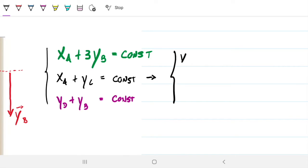So if I derive this, I'm going to get velocity of A plus 3 times the velocity of B has to be 0. Because the derivative of a constant is 0, likewise, the velocity of A plus the velocity of C has to be 0, and the velocity of D plus the velocity of B has to be 0.